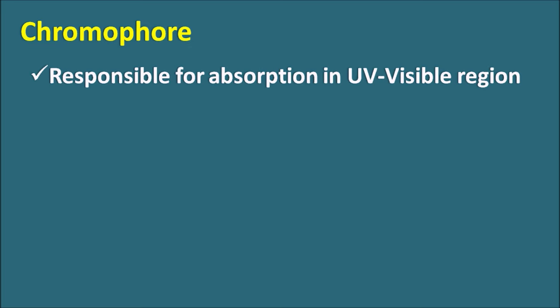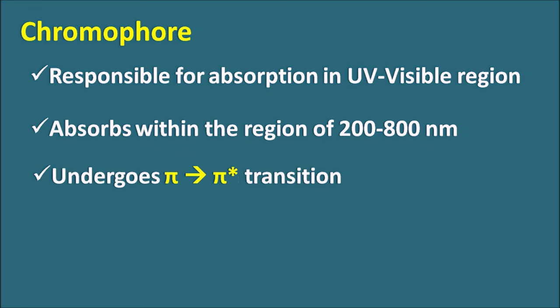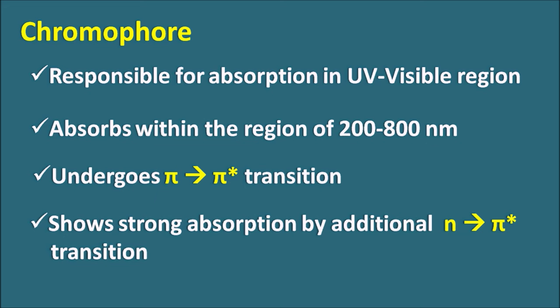Now let us define chromophore. Chromophore is the group in the molecule responsible for absorption within the UV-visible region. Practically, this group absorbs radiation within the region of 200 to 800 nm. Most of the time, this group undergoes pi to pi transition, and it can also show strong absorption by additional n to pi transition or by extended conjugation.